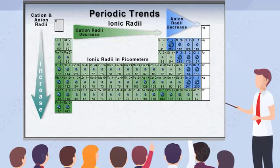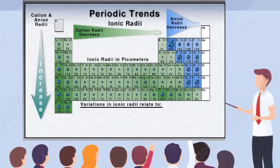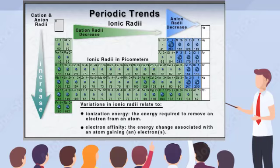Although general trends in ionic radii exist, they vary somewhat, and some ions are more common than others in nature. To gain a deeper understanding of why ionic radii vary across the periodic table, it helps to understand two concepts: ionization energy, which is the energy needed to remove an electron from an atom, and electron affinity, which is the energy change that occurs when an atom gains electrons.